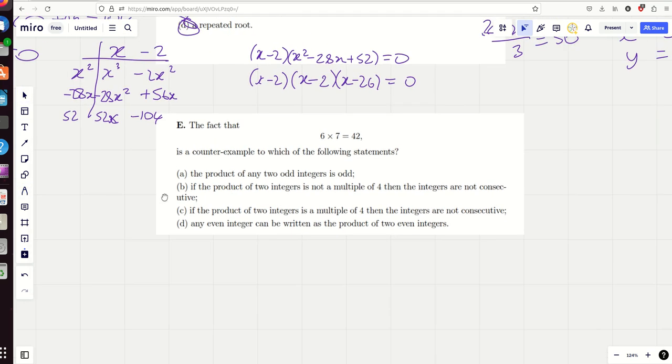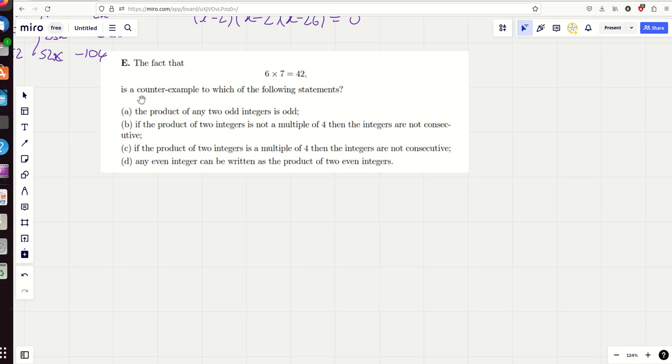The fact that 6 times 7 is 42 is a counterexample to which of the following statements? The product of any two odd integers is odd. OK, a claim that basically when you multiply two odd integers together, you get odd. Well, this isn't two odd integers multiplied together, so it's no counterexample to that. If it was like 7 times 9 equals 42, it would be, but it's not.